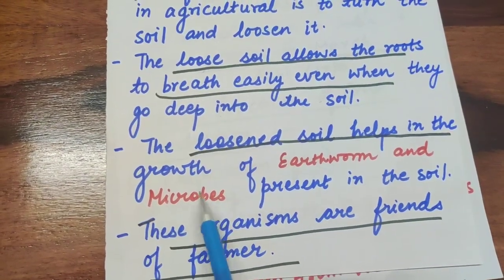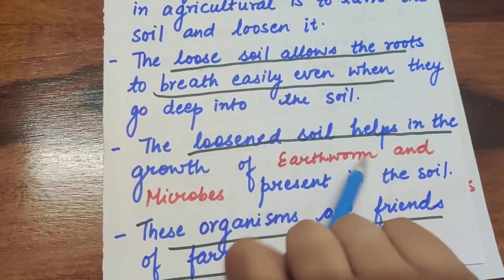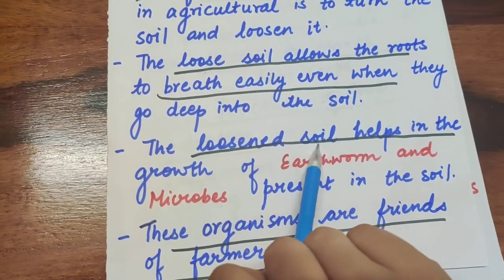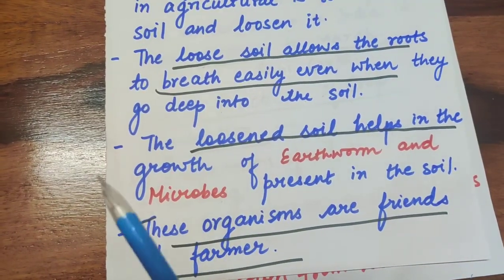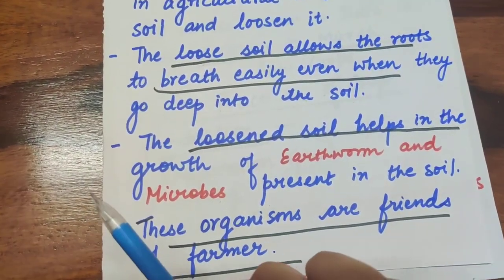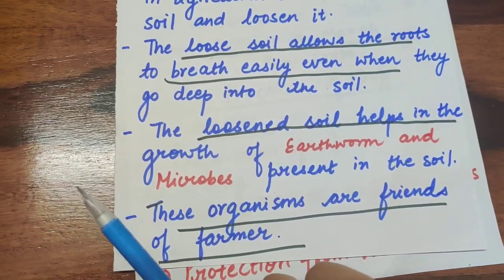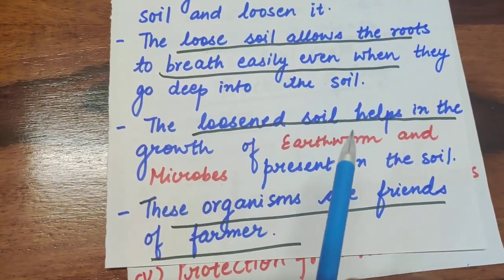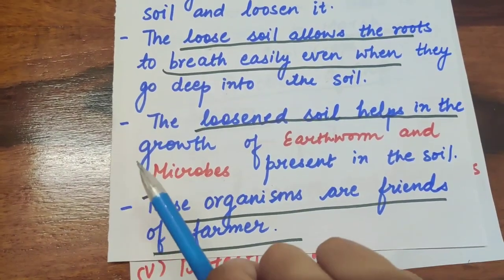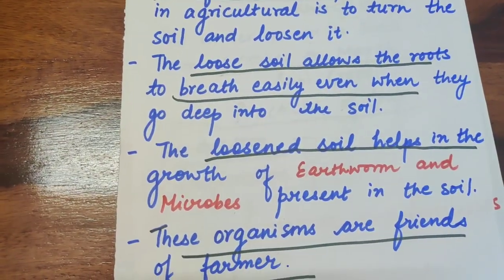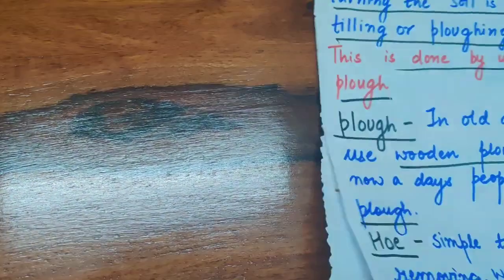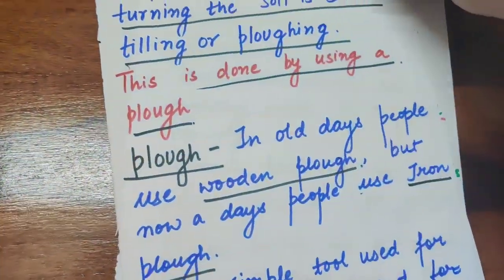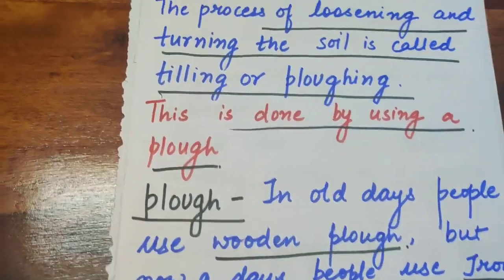Loosened soil helps in the growth of earthworms and microbes. Earthworms help in vermicomposting, and microbes like Rhizobium bacteria play a significant role in nitrogen fixation and improving soil fertility. These organisms are friends of the farmer and help in the growth of crops.